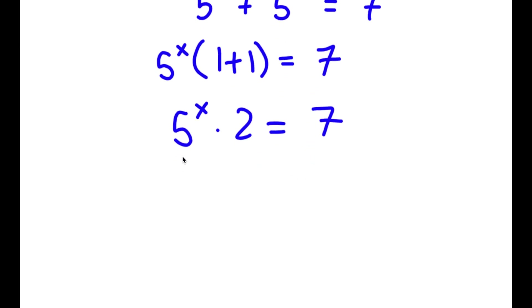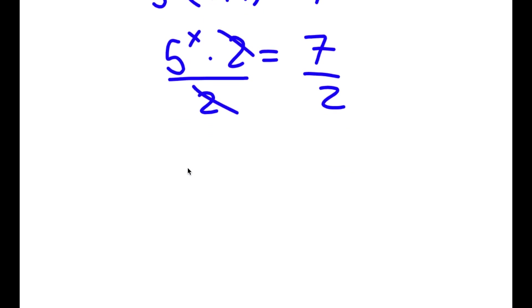Now I can divide both sides by 2. So these two cancel out, and now I have 5 to the power of x is equal to 7 over 2.